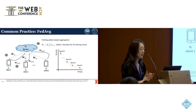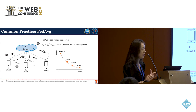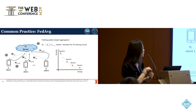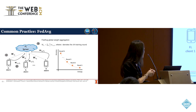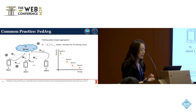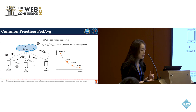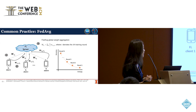In federated learning, we have a central server and multiple clients each holding local data. The process begins with the server sending the initial global model W_T0 to each client. Each client, from client 1 through client K, computes updates based on their local data. For instance, client 1 updates their model W_T0 to W_C1_T1, and similarly for the rest. After local training, each client sends their model updates back to the central server, where the server computes a new global model by averaging all updates. This process is repeated over multiple training rounds.